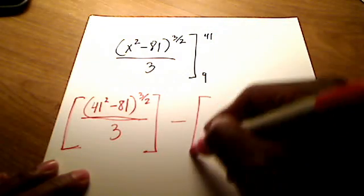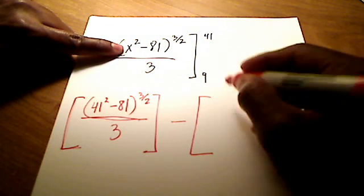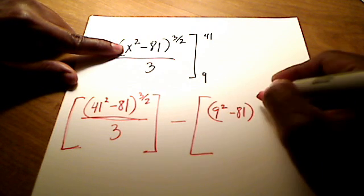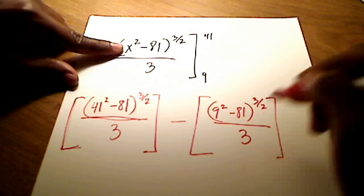Alright. Minus. And now in place of x, I'm going to put in the lower limit of 9. So that's 9 squared minus 81 quantity raised to the 3 halves all over 3.